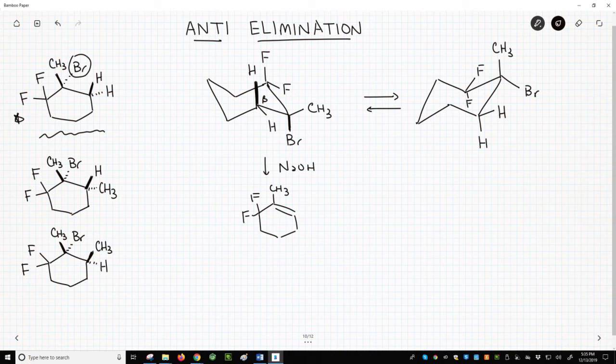So the chair on the left will work for the E2. In the other chair, however, neither beta-hydrogen is anti-relative to our carbon-bromine bond. Neither of those are anti.